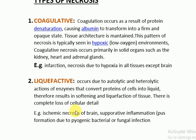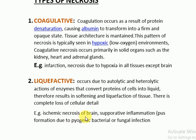Number two is the liquefactive type of necrosis. It occurs due to autolytic and heterolytic actions of enzymes that convert proteins of cells into liquid, resulting in softening and liquefaction of tissues. There is complete loss of cellular detail. Examples are ischemic necrosis of the brain, suppurative inflammation — that is pus formation due to pyogenic bacteria — and fungal infection.